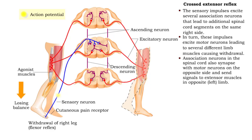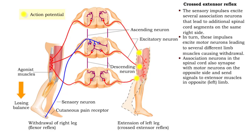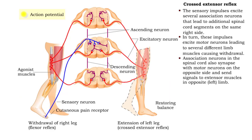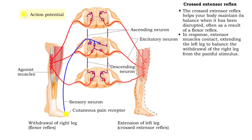This reflex arc becomes contralateral when the sensory impulses also excite association neurons in the spinal cord that synapse with motor neurons on the opposite side and send signals to extensor muscles in the left leg. In response, extensor muscles contract, extending the left leg to balance the withdrawal of the right leg from the painful stimulus.